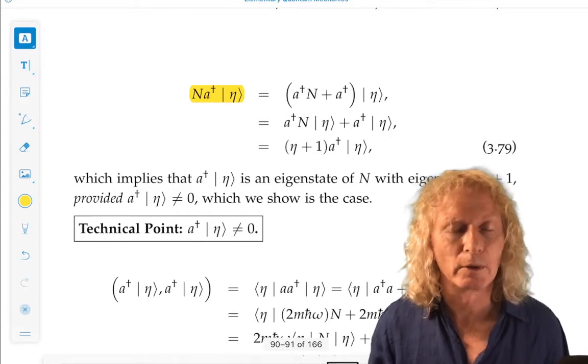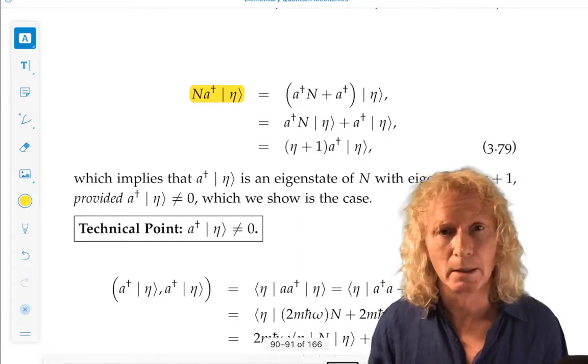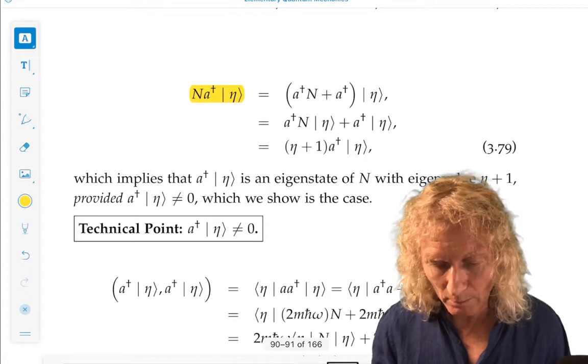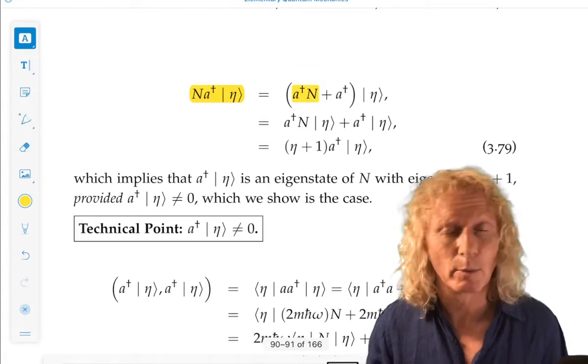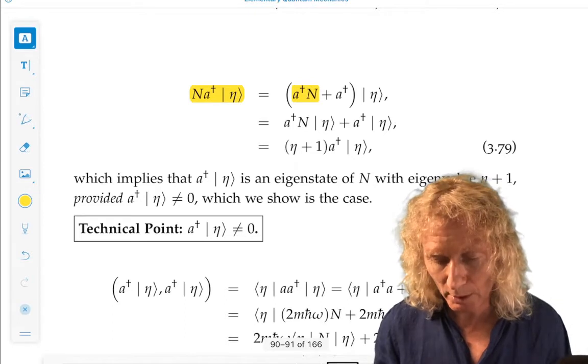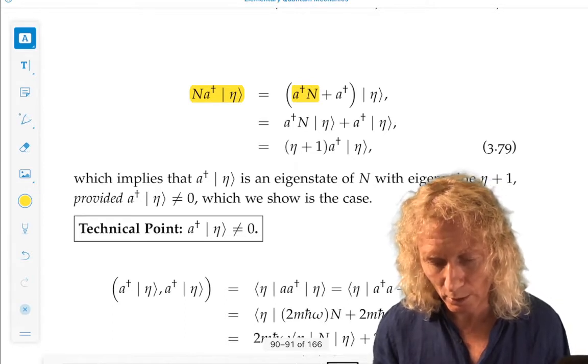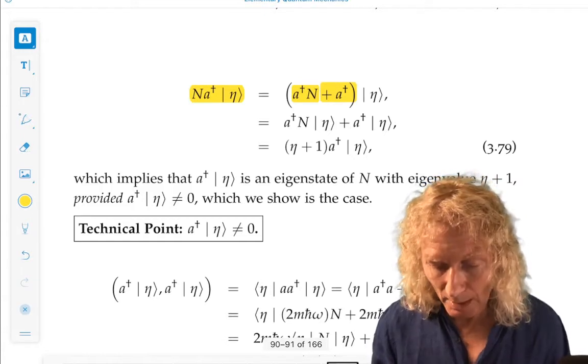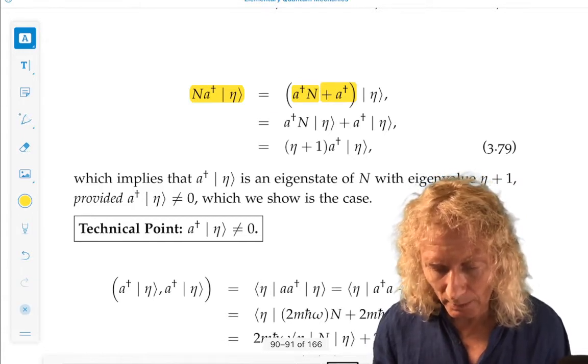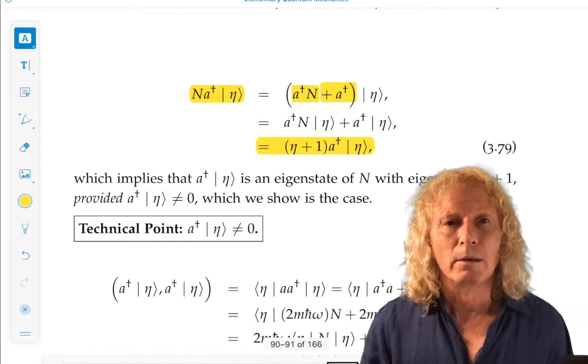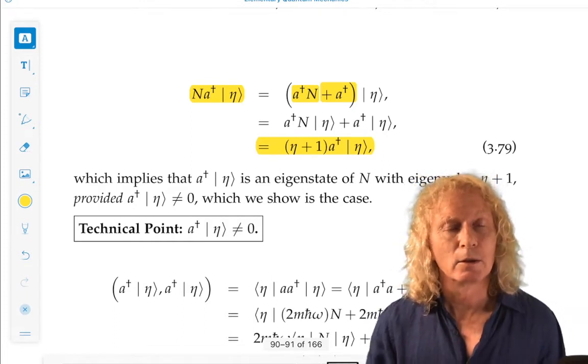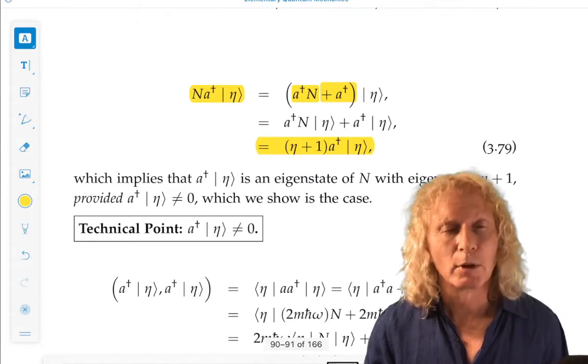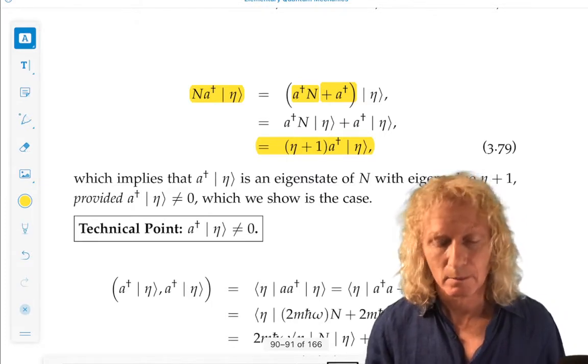It just delivers us the eigenvalue eta multiplying ket eta. So we want to switch the order of a dagger and eta, but we can't because they don't commute, but we have this commutation relation. We can switch the order, but we have to add to it a dagger. And now it's fairly easy to see that the number operator acting on a dagger eta gives us eta plus one a dagger eta.